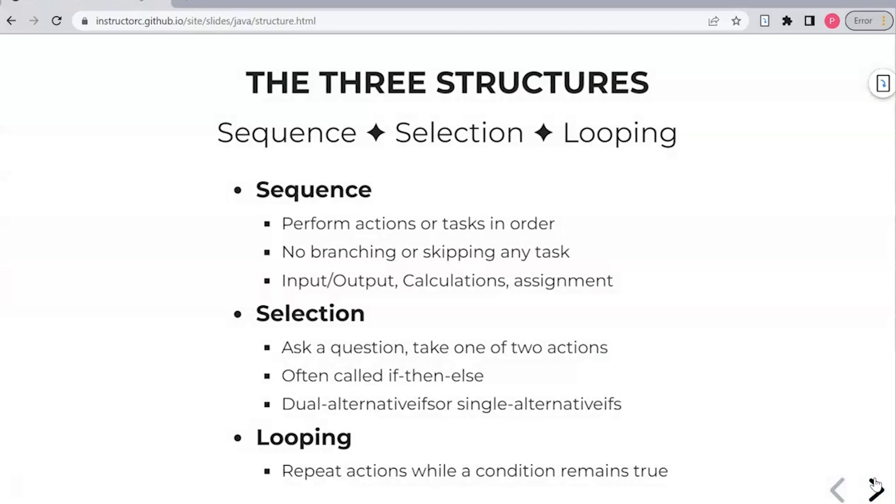So there's three different structures: sequence, selection, and looping. With sequence it's your input, your output. You may have a calculation statement but it's essentially forming a task. Selection, you come to a juncture in your program where you have to make a decision. So you will see structures such as if-else statements, if statements. Sometimes those are called single alternatives and dual alternatives. And then you have looping. You repeatedly do something until the condition is met.